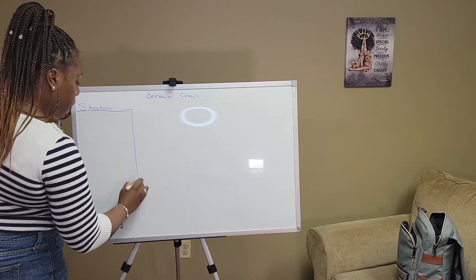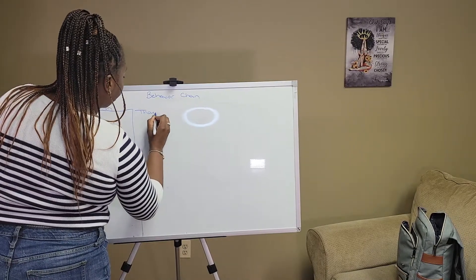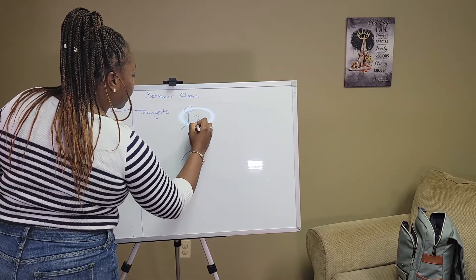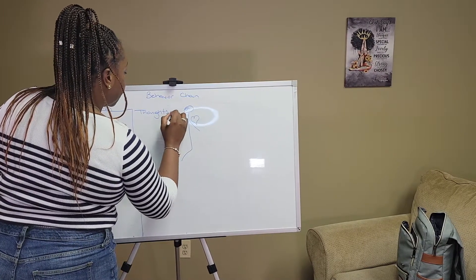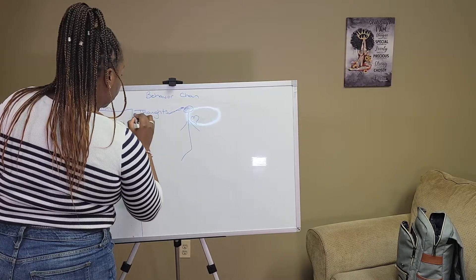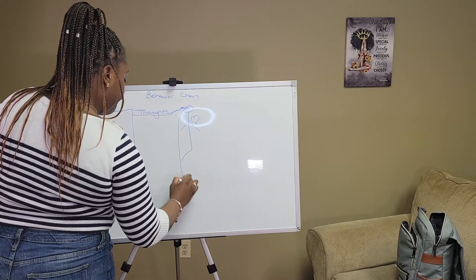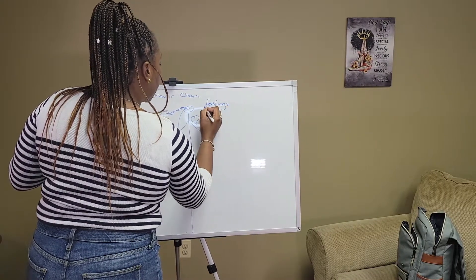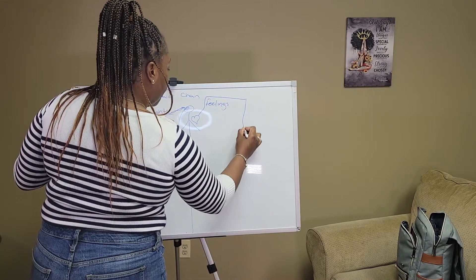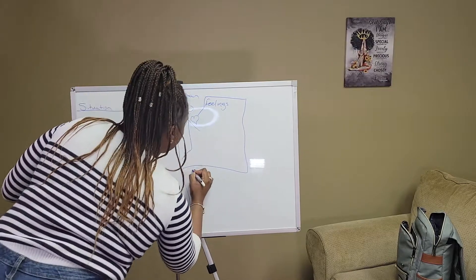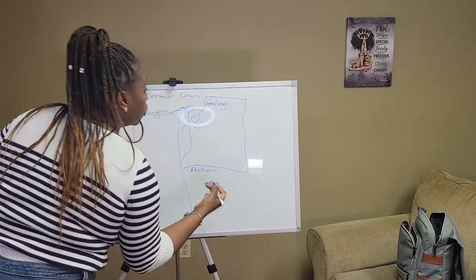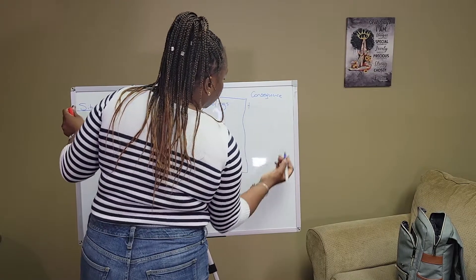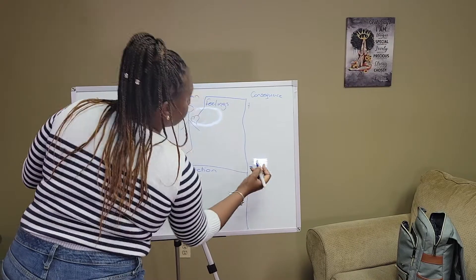I'll draw a box for the situation, then you have the thoughts — I'll draw a little stick man, a little heart, and a little brain, because the thinking box goes to the brain. Over here we have the feelings box, which goes to the heart. Then under here we have the action — what you actually do — and over here we have the consequence, with a plus for positive consequences and a negative sign for negative consequences.